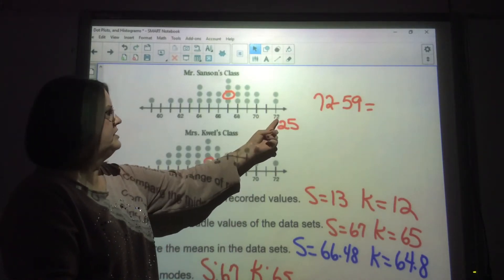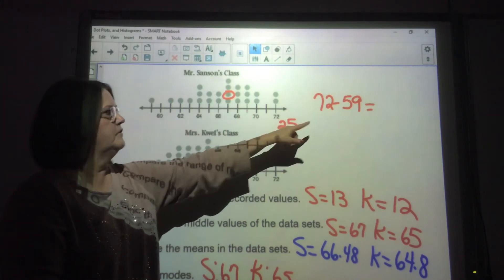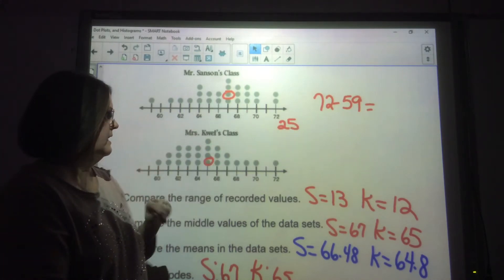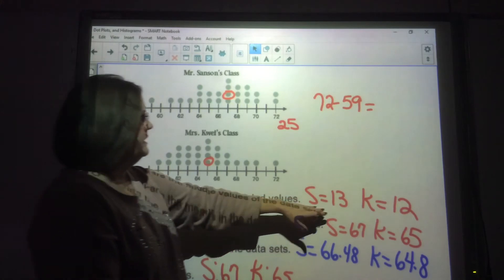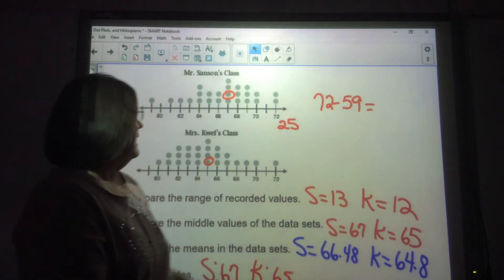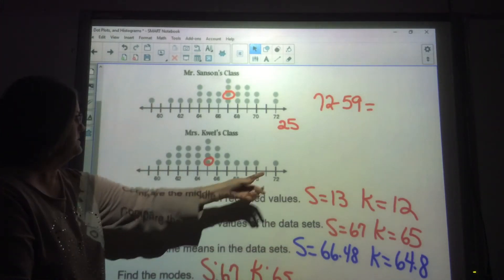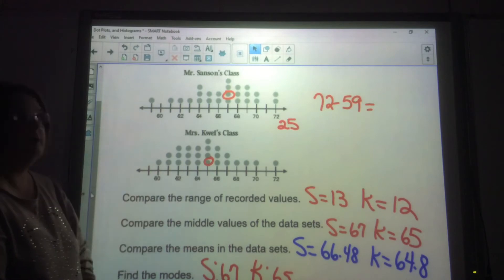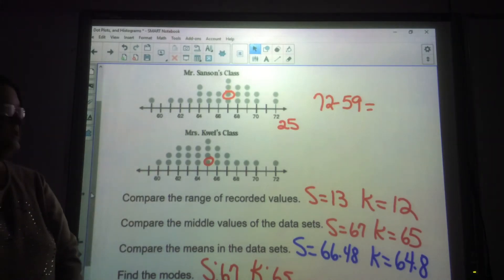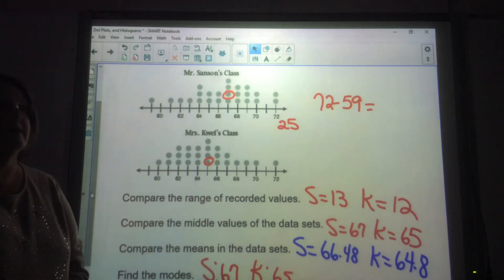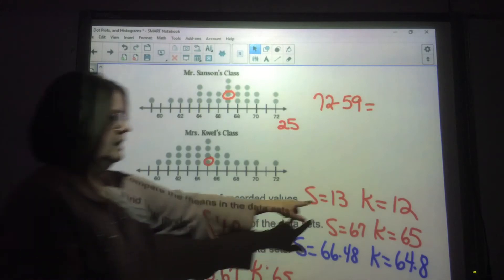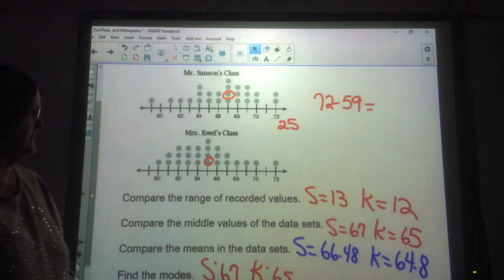It said compare the range of the two recorded data values. So we want to do 72 minus 59. The range here is, his range is 13. And then Mrs. Quay's goes from 72 to 60. Her range is 12. You just literally just do what they ask you to do. And look, his range is a little higher. Is it significantly higher? No, not really. One inch is not that much of a deal, but his is higher.